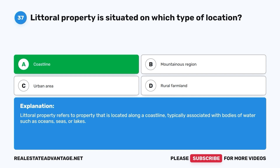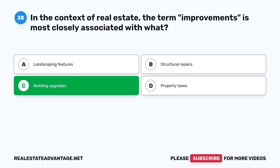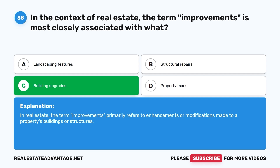Question 38: In the context of real estate, the term 'improvements' is most closely associated with what? A. Landscaping features. B. Structural repairs. C. Building upgrades. D. Property taxes. The correct answer is C, building upgrades. In real estate, the term improvements primarily refers to enhancements or modifications made to a property's buildings or structures.